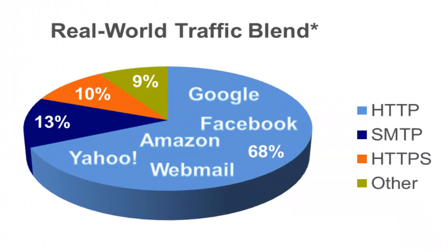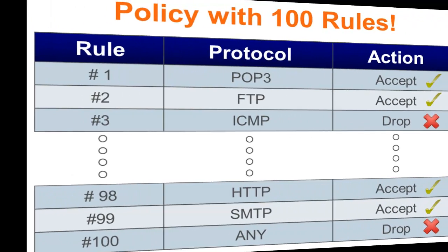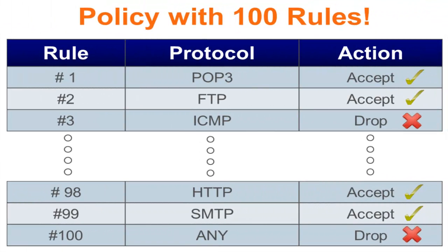The traffic blend consists of 68% HTTP, 13% SMTP, 10% HTTPS, and 9% other traffic like DNS, POP3, and Telnet. The test is done with a typical security policy with 100 rules, with logging enabled, and with network address translation enabled. The IPS profile is the profile recommended for the best security.